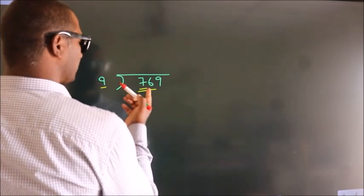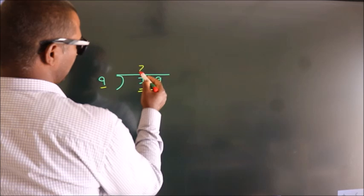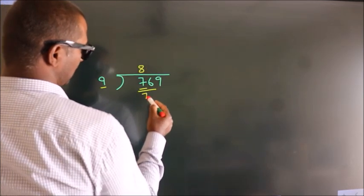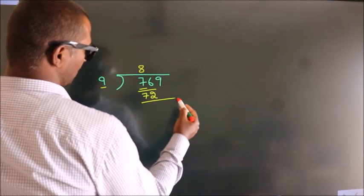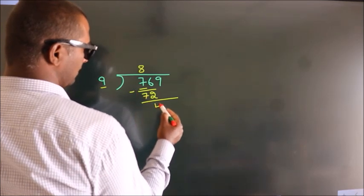A number close to 76 in the 9 table is 9 times 8, which is 72. Now we should subtract, and we get 4.